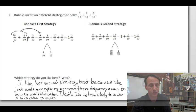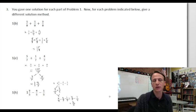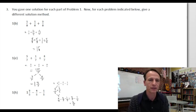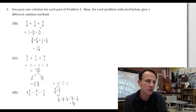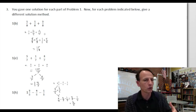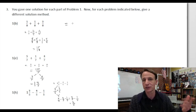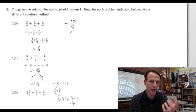Number three is the last one. The instructions say: for each problem indicated, give a different solution method. I've copied in the earlier examples — one B, one E, and one H — so you can see them. What we did before in one B was group together to make one whole as eight eighths. So another solution here would be to add straight across: five plus five plus three makes thirteen. So we have thirteen eighths.